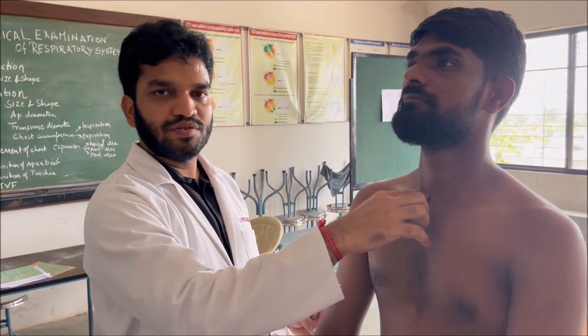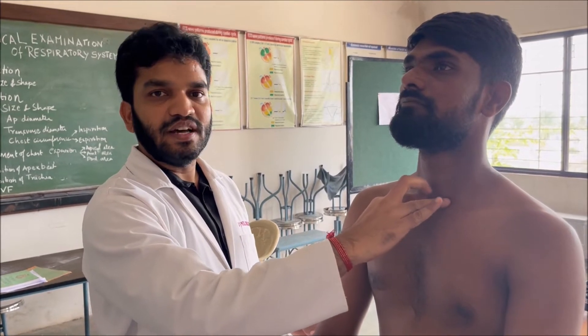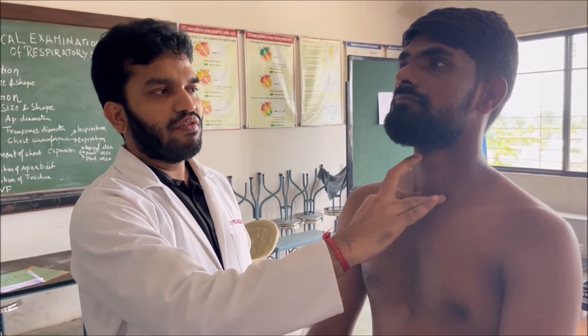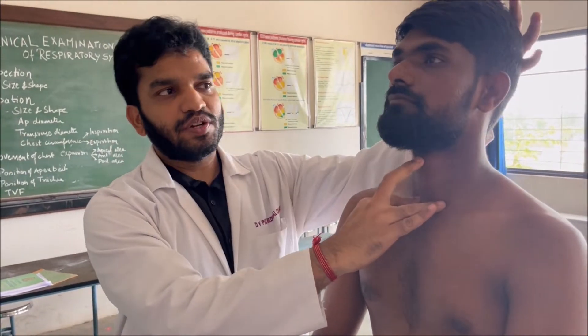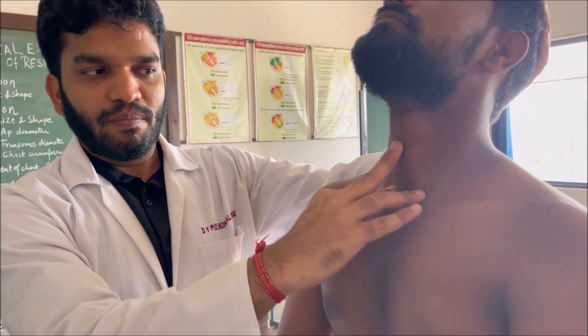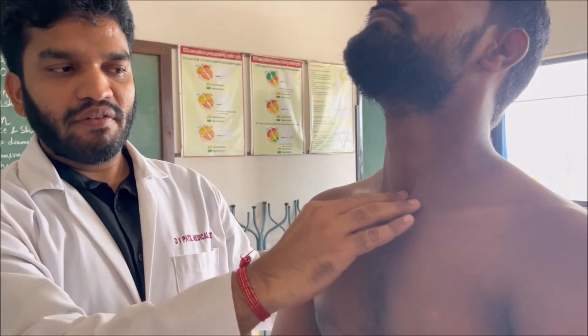Place the tip of the index finger and ring finger of the right hand on the sternoclavicular joint on either side, and place the middle finger on the suprasternal notch. Then gently push the middle finger forward to feel the tracheal rings.